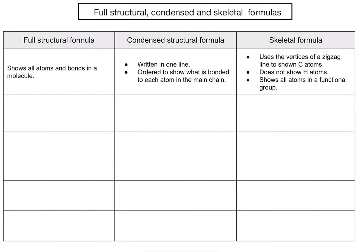Let's have a look at a few examples. Here's the first one. I've got four carbons, and there's a bromo functional group on the right-hand side. To convert that into a condensed structural formula, I'm going to order a chemical formula based around what is on each carbon in my main chain.